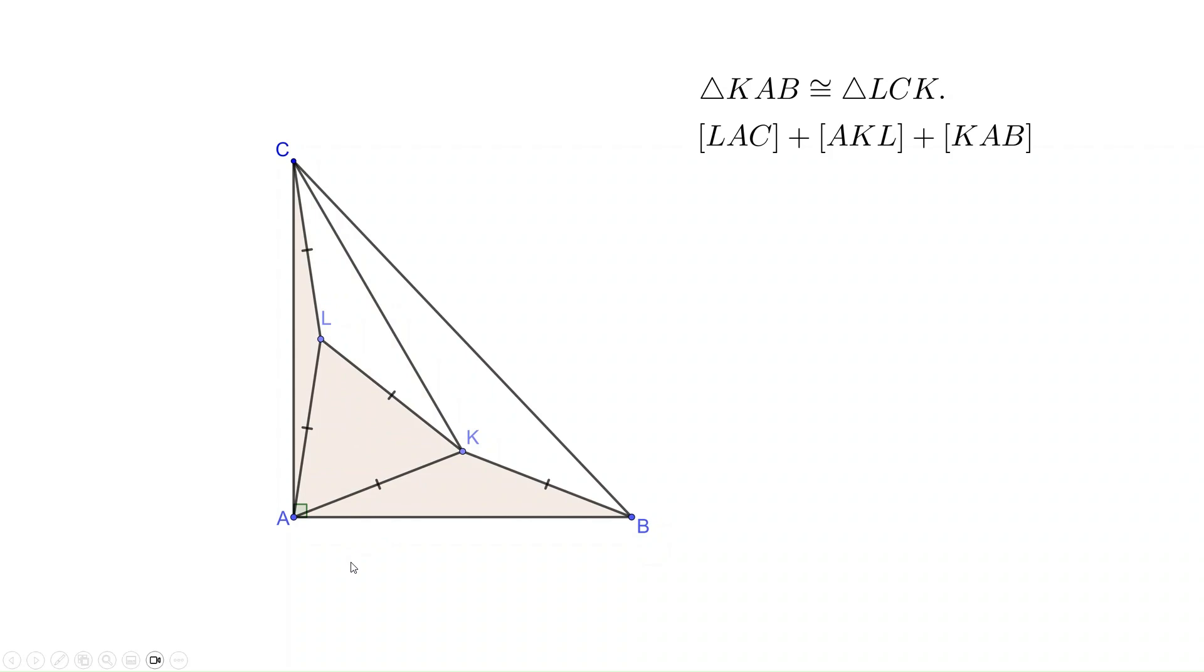Now let's look at the areas of three triangles: LAC, AKL, and KAB. Their sum equals the area of triangle ABC minus the quadrilateral BKLC. The quadrilateral BKLC is actually our target. Now, one of the triangles, KAB, can be replaced by LCK because of the congruence. After the replacement, the three triangles come up with a larger triangle, ACK.